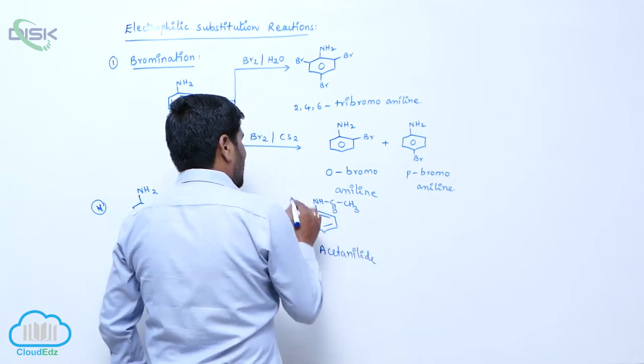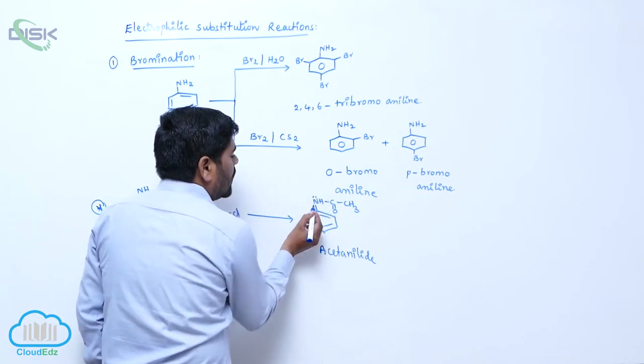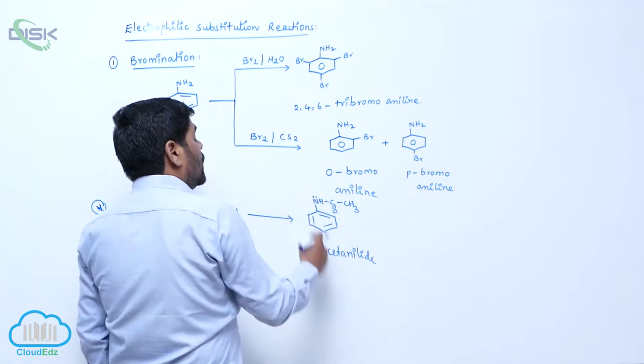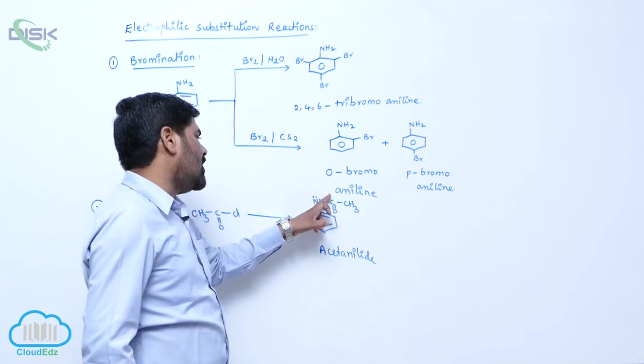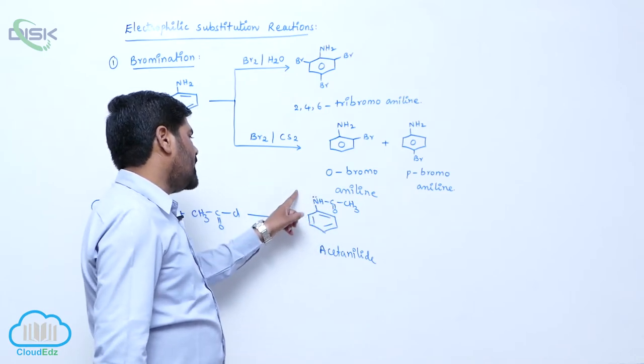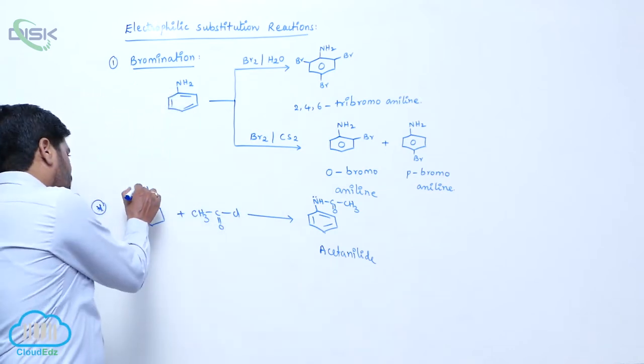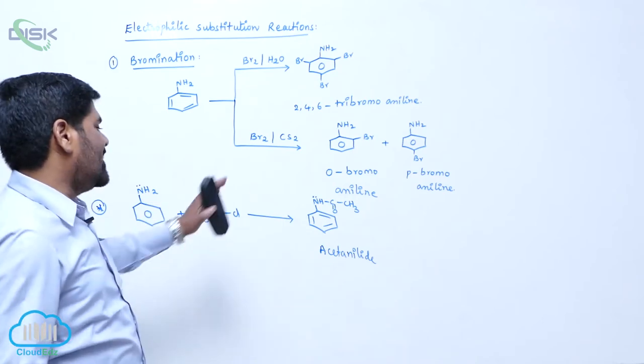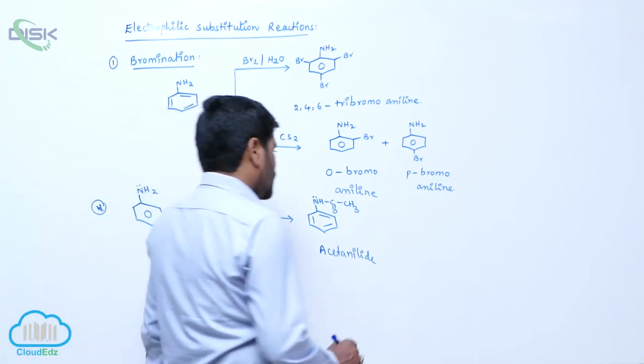This nitrogen lone pair of electron may delocalize with this double bond of C=O and this lone pair of electron donates here, so donating capacity towards ring decreases. The reason is this lone pair involved in conjugation with C=O. This lone pair of electron donates this direction also, whereas this lone pair of electron completely donates towards ring only. So that is the reason why while acetylation, reactivity decreases.